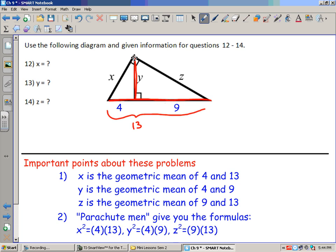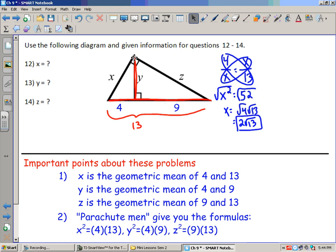I'm going to find x and y, and then you can probably figure out how to find z. If x is the geometric mean of 4 and 13, you can set up the equation like that. When you talk about means and extremes, these are your means, these are your extremes. You cross multiply your means and times the extremes. 4 times 13 is 52. Square root, x equals the square root of 52. Well, 52 is the product of perfect square 4 and 13, so x would be 2√13.